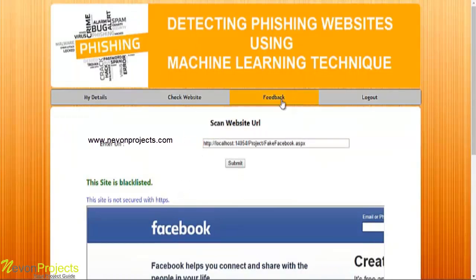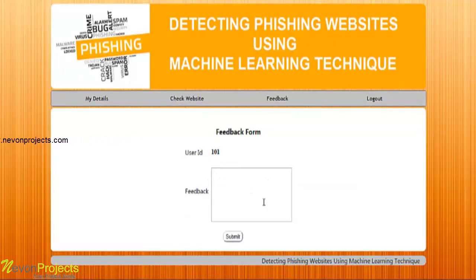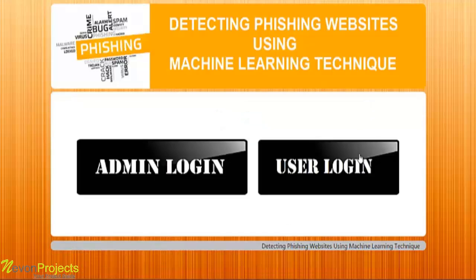Let's see the next module, that is feedback. The user ID will be provided by the system, and the user must provide feedback. Once he clicks the submit button, the feedback will be shown to the admin. This is how the user module works, and this is how detecting phishing websites using machine learning techniques works.